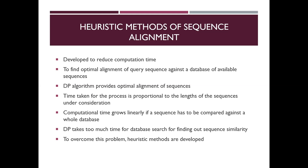These heuristic methods are definitely faster than the dynamic programming method, but they do not guarantee optimal alignment of sequences as we see in case of dynamic programming. That is the disadvantage of heuristic methods. The heuristic methods are alternative methods of pairwise sequence alignment which are faster than dynamic programming. Though dynamic programming provides optimal alignment, the time taken increases proportionally with the length of sequences.